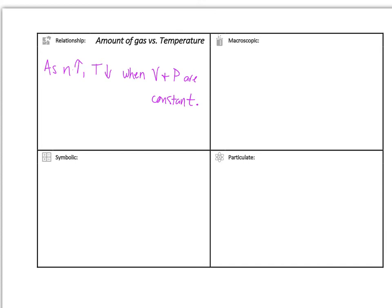There's not a very good macroscopic example that I can give for you with this one, but we're going to really focus in on our particle level description to really help with this. So symbolic, let's say, again, amount of gas increases, temperature decreases, volume and pressure once again are going to be constant.